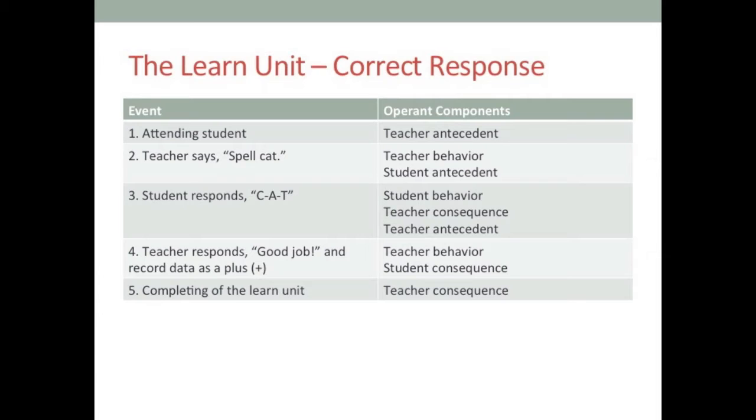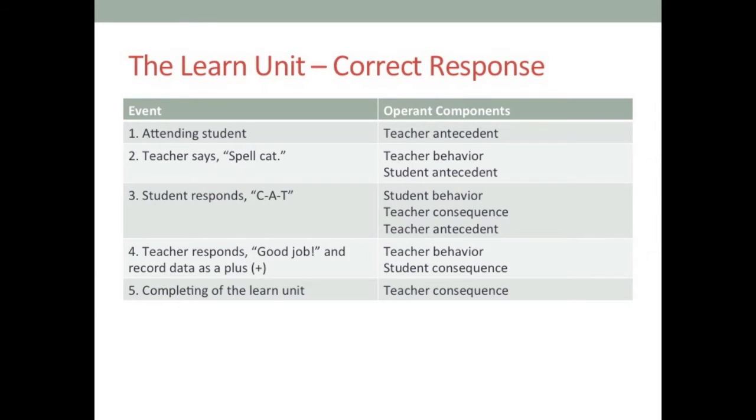The student's response 'C-A-T' is the student behavior, which in turn becomes my consequence — I hear my student responding correctly, which becomes my antecedent to provide praise. I say 'good job' and record a plus on my data sheet. The student hears they did it right, and that is the completion of the Learn Unit — my consequence for the student. So you see how the student's behavior and our behavior are interlocking three-term contingencies.